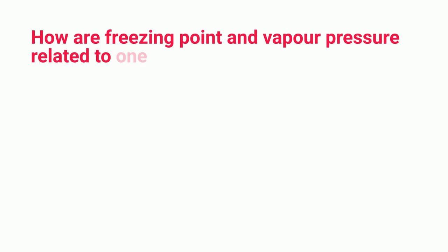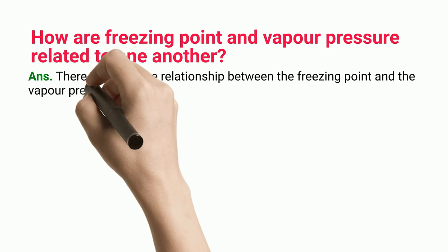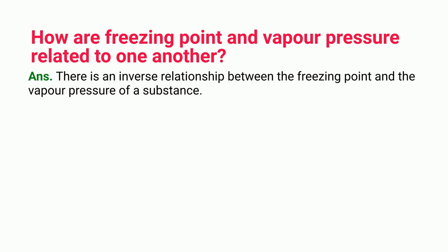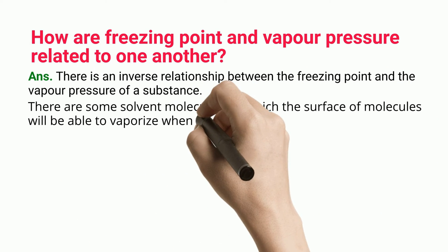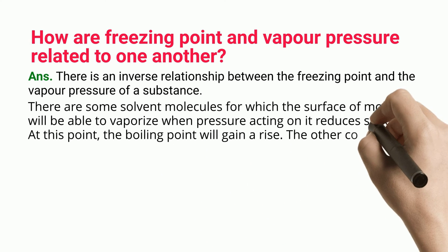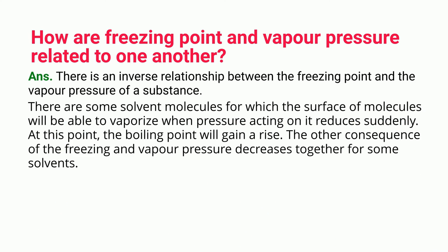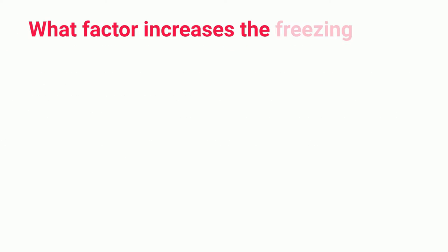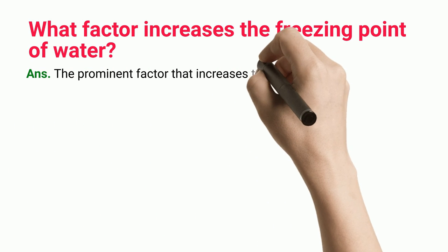How are freezing point and vapor pressure related to one another? There is an inverse relationship between the freezing point and the vapor pressure of a substance. There are some solvent molecules for which the surface will be able to vaporize when pressure acting on it reduces suddenly, at which point the boiling point gains a rise. The other consequence is that freezing and vapor pressure decrease together for some solvents.